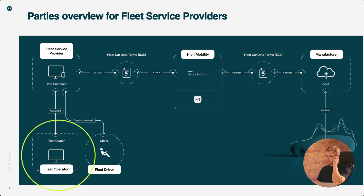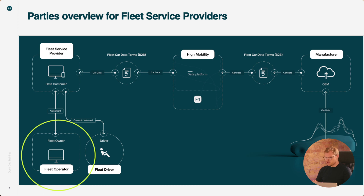Starting from the fleet operator — the owners of the fleet are the ones who can authorize you to activate cars. They are also your customer or potential customer, and they always have to give the agreement and consent for you to use the data. They do that because they want to use your service, for instance your fleet management service, to get data from their vehicles — general health, trouble codes, warning lights, geo-fencing and other features.